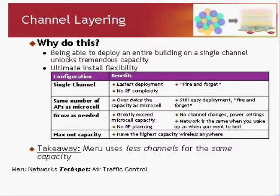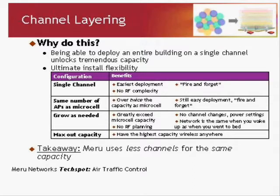Why do this? Being able to deploy an entire building on a single channel unlocks tremendous capacity for those other channels. It comes down to install flexibility. A single channel configuration is really the easiest deployment to set up — you just figure out where to put the access points based on coverage calculations, perhaps a rule of thumb like every 60 feet. There's no RF complexity involved. You install it and it's set and forget — you won't have to worry about changing RF plans or strange things happening. None of that matters because you never needed a detailed RF plan to begin with.